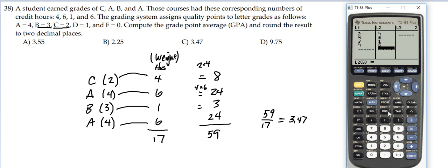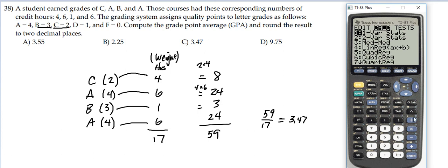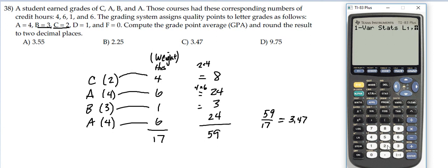Then press STAT again, arrow to CALC, and press ENTER for 1-VAR-STAT. We're going to do 1-VAR-STAT list 1, comma, 2nd, list 2. You see we get that same result of 3.47 that we got when we did it manually. The graphing calculator can be a help if you're familiar with it and is probably the faster way.